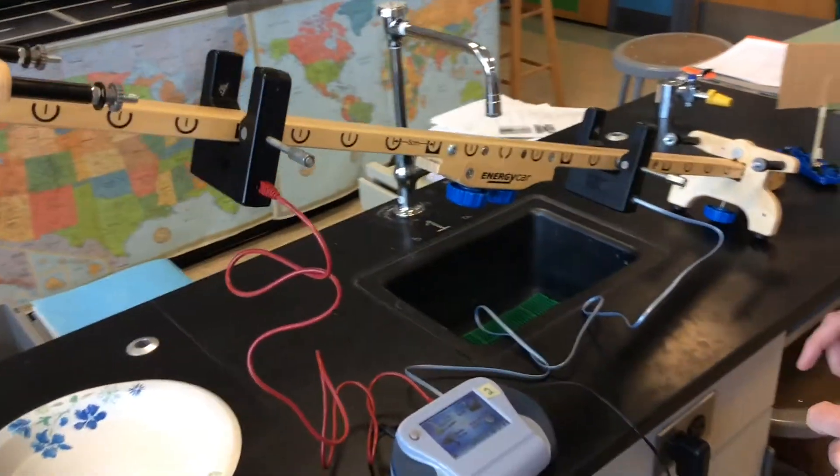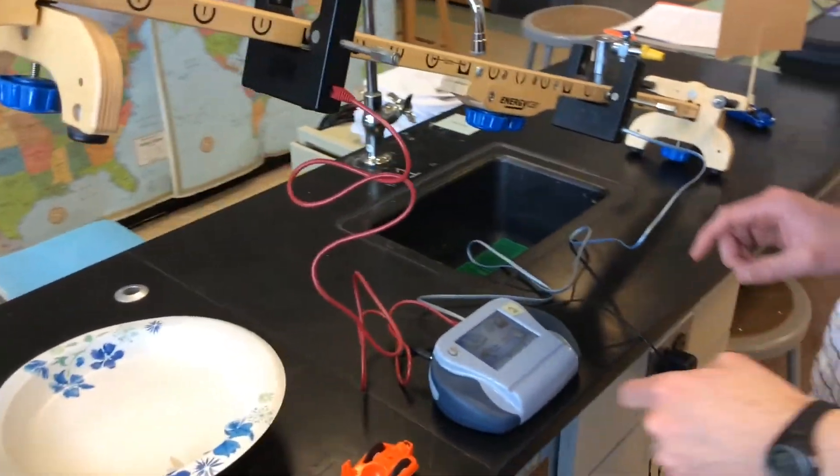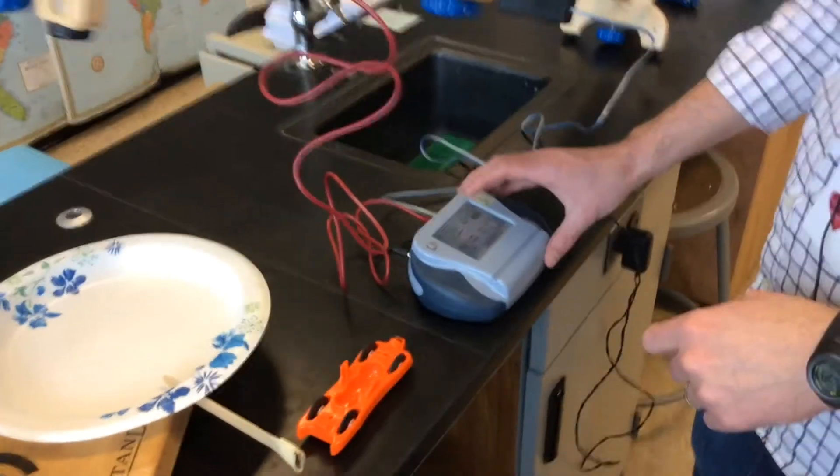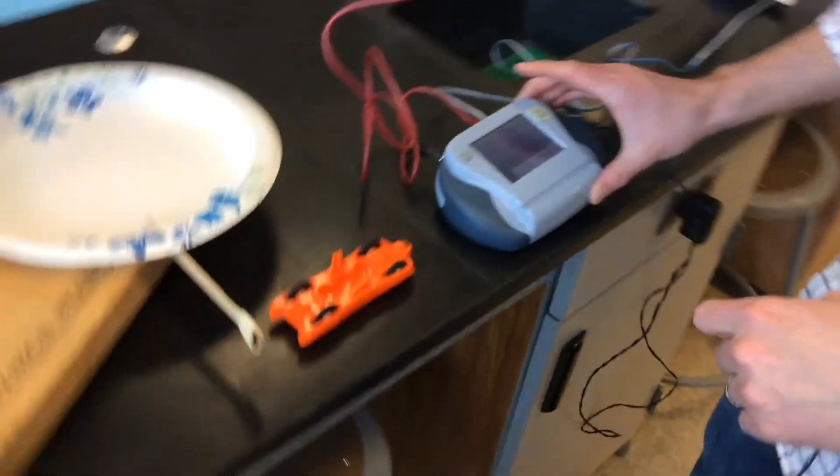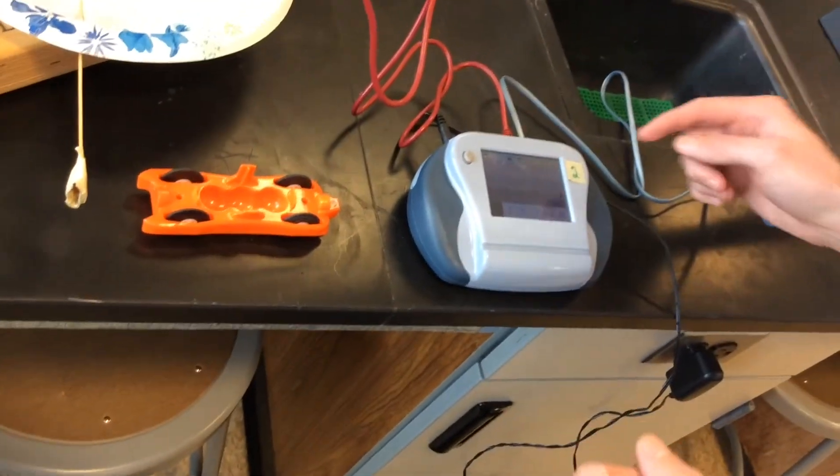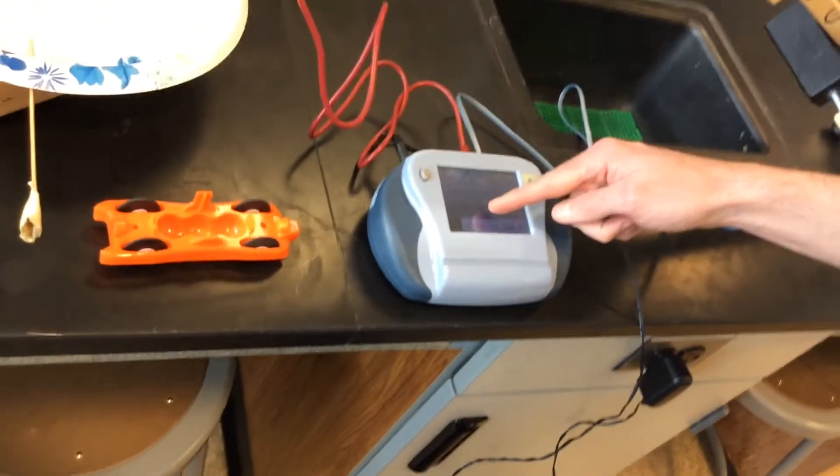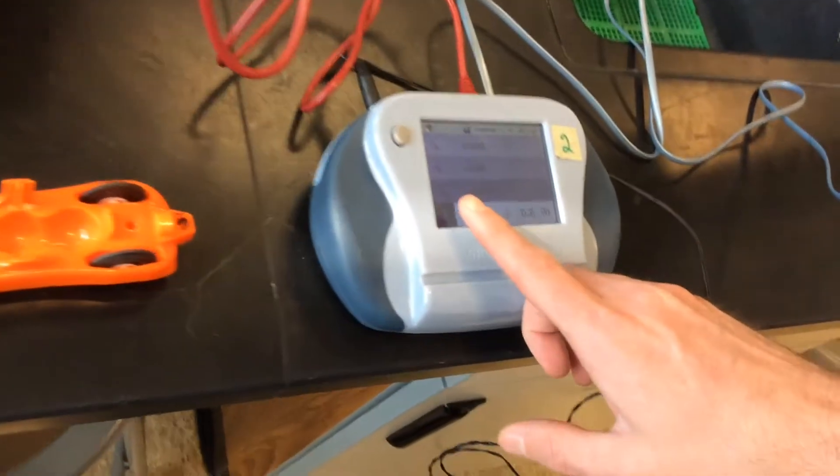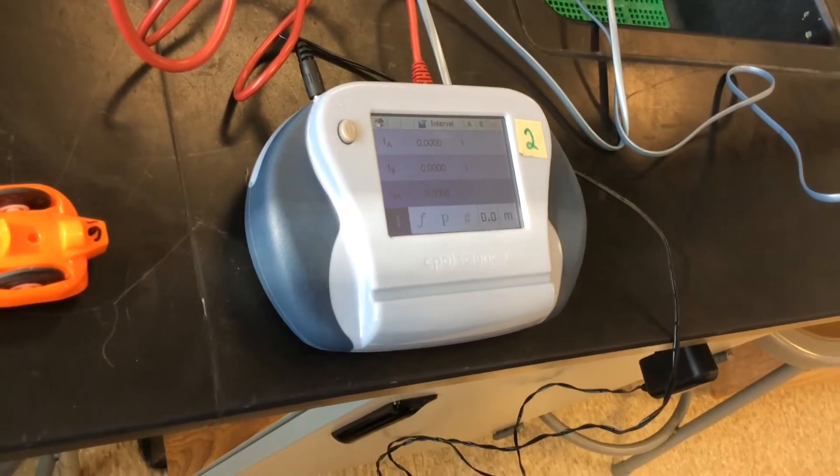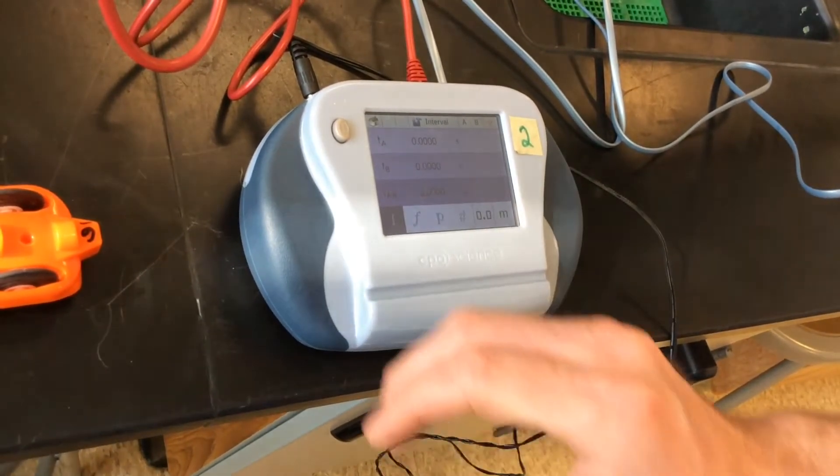What we're going to do first is get a set of control data. I'm not going to actually collect all the data, but I'm going to show you how it's done. We're going to be in CPO timer mode. CPO timer mode gives you an A, a B, and an A-B time. We only care about the A-B time for this lab. And you'll see on your data table, there's only a spot for the A-B data.